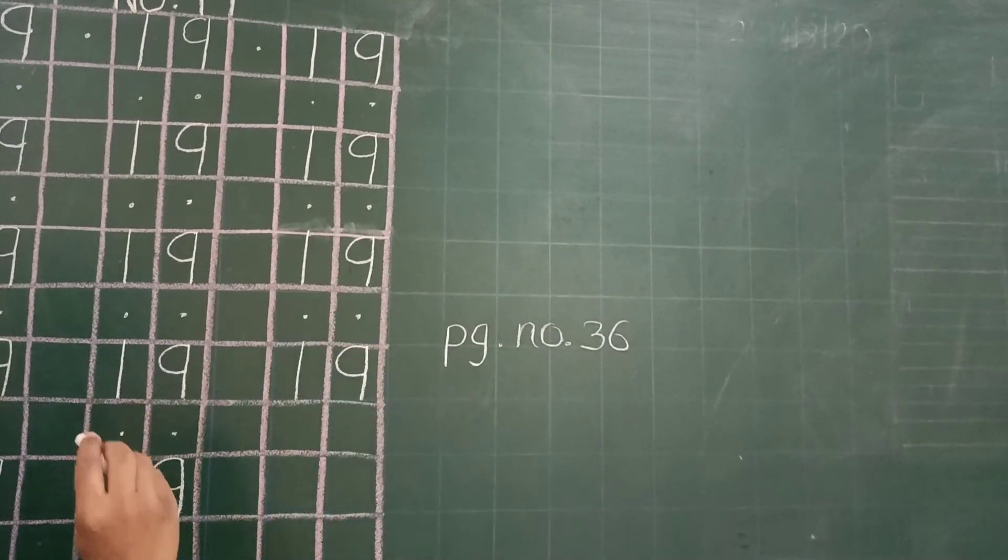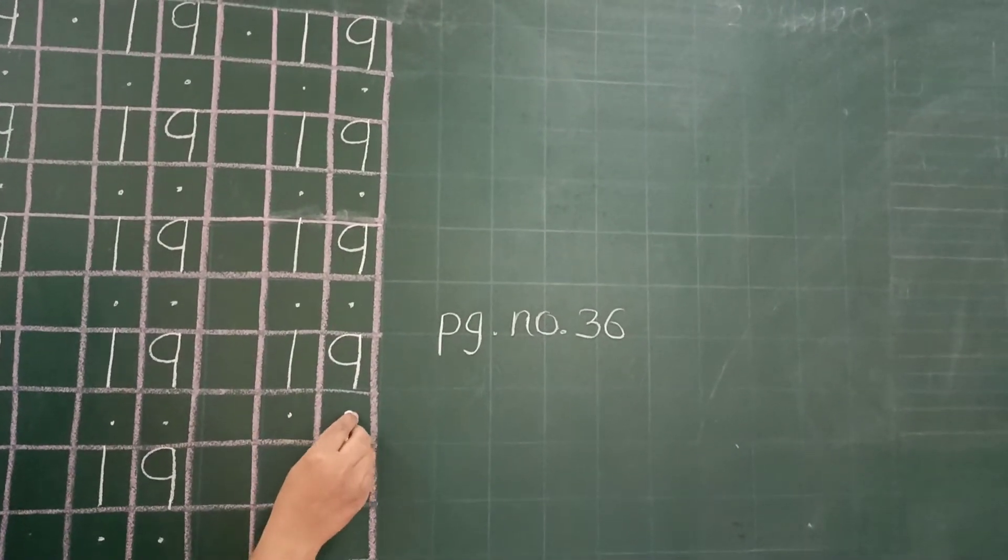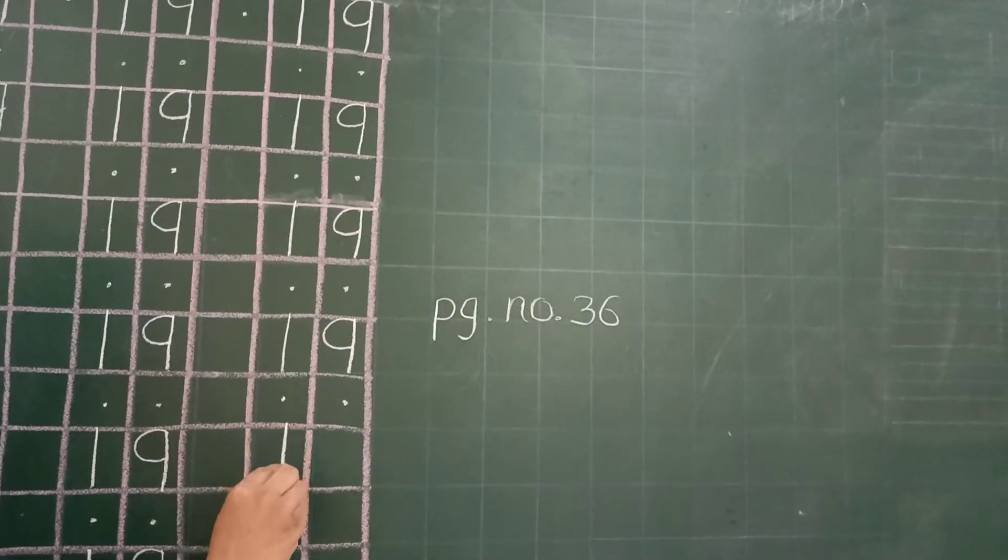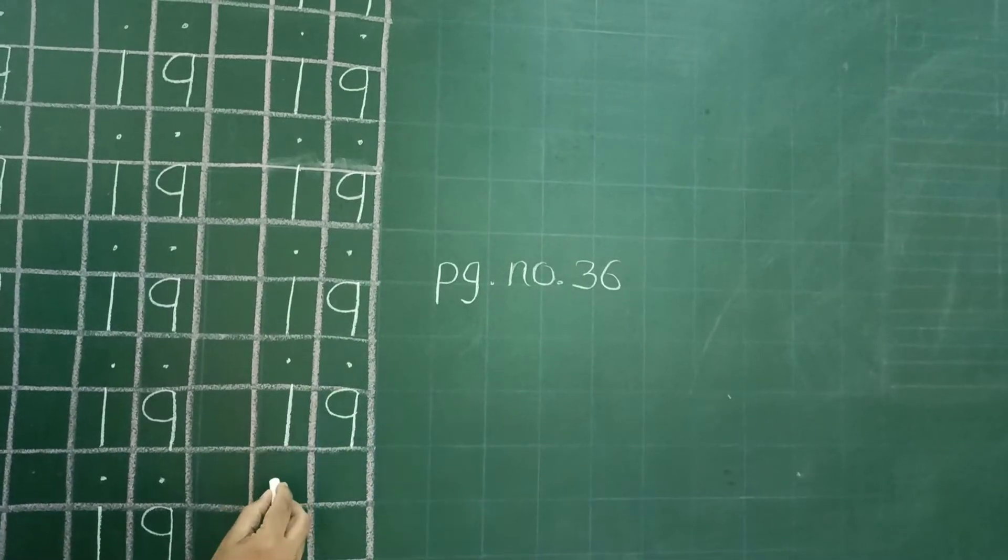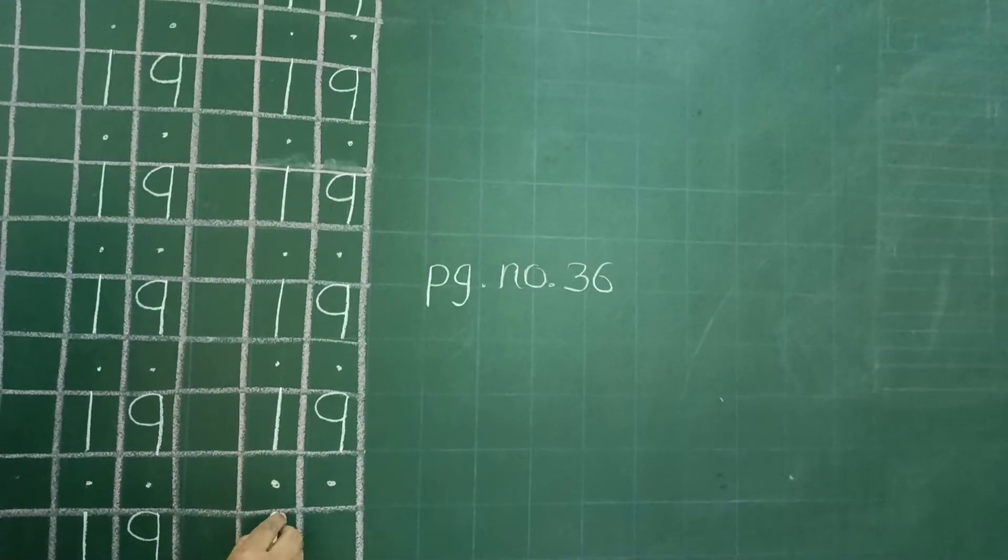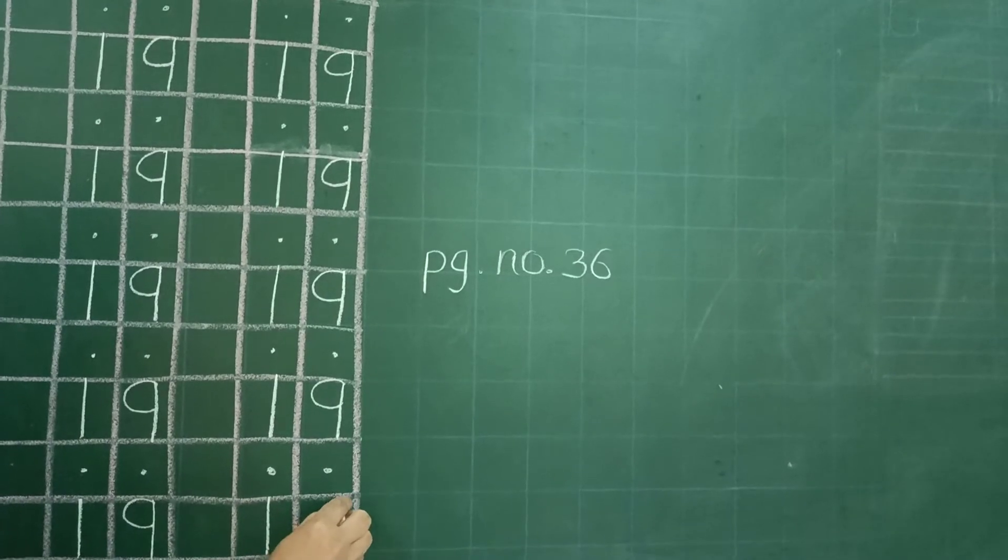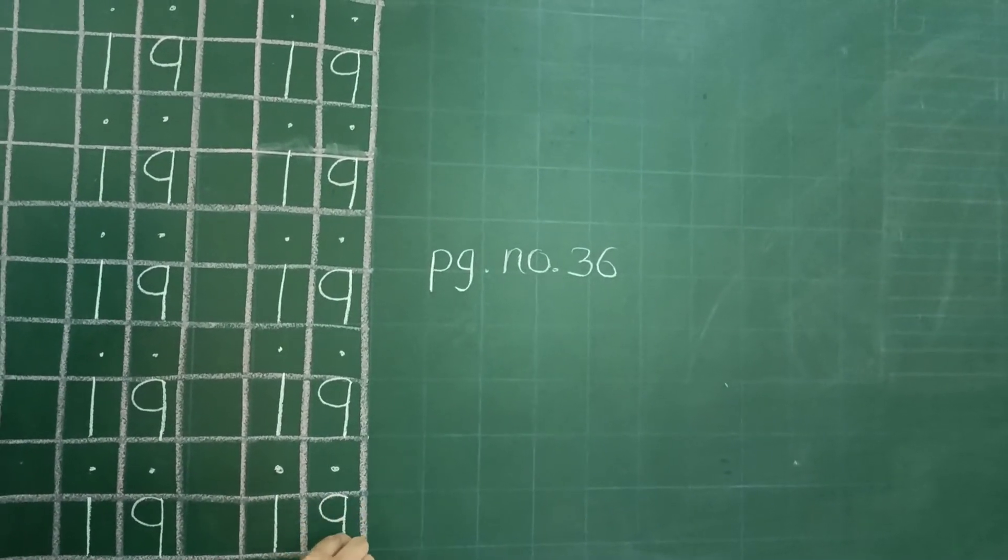So what are you doing? 1, 9, 19. Leave this 2 box and write here 1 and 9, 19. Again leave this 2 box and write here 1, 9, 19.